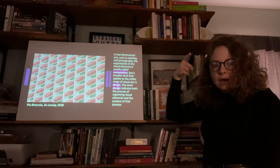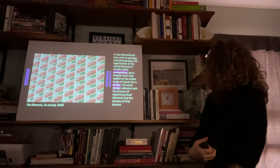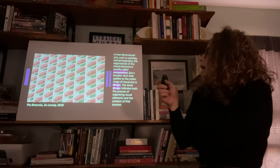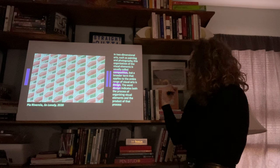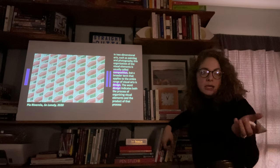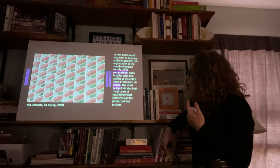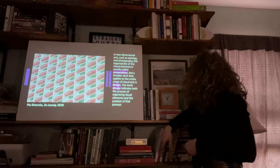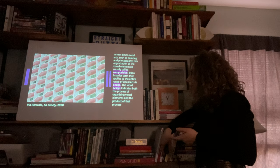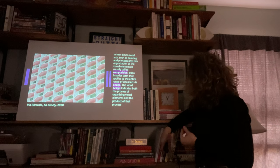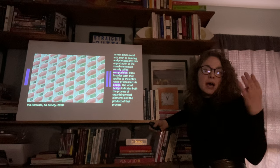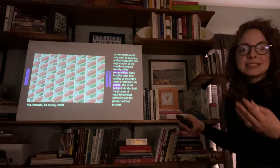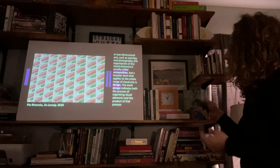So this first picture on the intro slide is a photograph by Pia Rivorla, and it's called 'So Lonely,' done in 2020. In two-dimensional arts such as painting and photography, this organization of visual elements is usually called a composition. But a broader term that applies to the entire range of visual arts is design. The word design indicates both the process of organizing visual elements and the product of that process. This photograph is both a composition and a design.